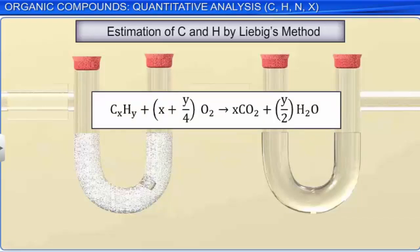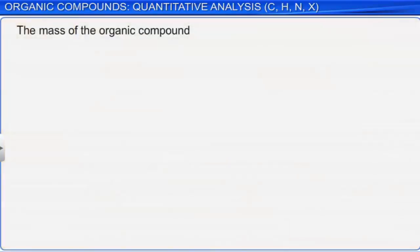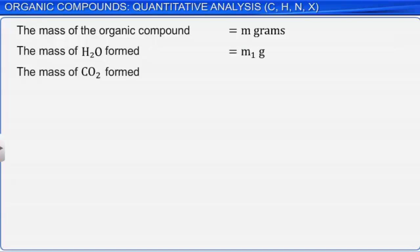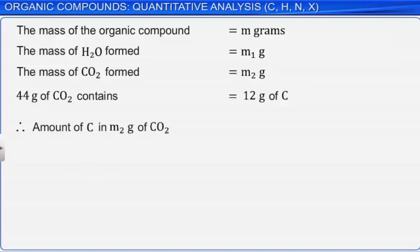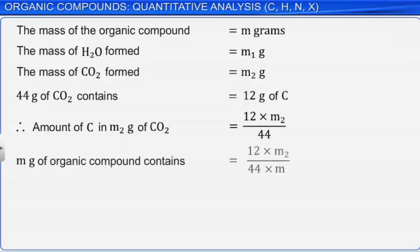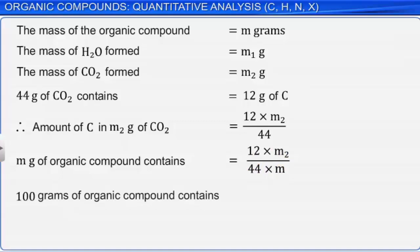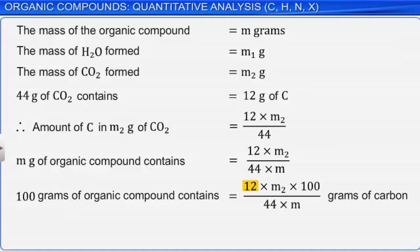Let the mass of the organic compound taken be M grams, the mass of water produced be M1 grams, and the mass of carbon dioxide produced be M2 grams. We know that 44 grams of carbon dioxide contains 12 grams of carbon. Therefore, the carbon content in M2 grams of carbon dioxide is 12 × M2 / 44. Hence, the percentage of carbon is (12 × M2 × 100) / (44 × M). This gives the percentage of carbon present in the given organic compound.